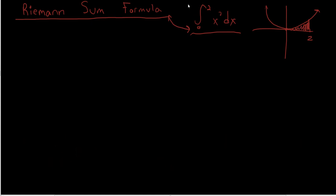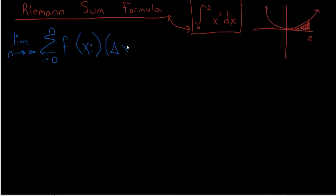And we can always just use the integral formula, but we will be using the Riemann sum formula. And the Riemann sum formula is the following: the limit as n goes to infinity of the sum to n, i equals 0 of f(x_i) times delta x.